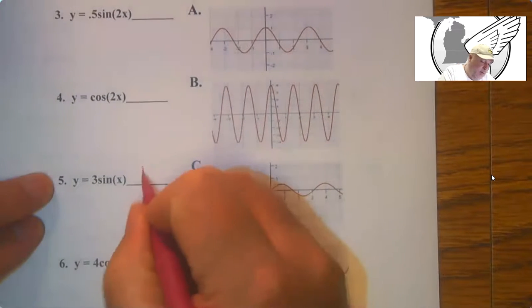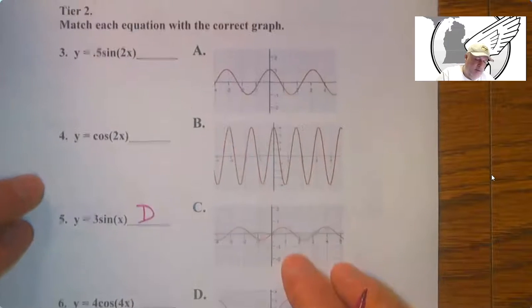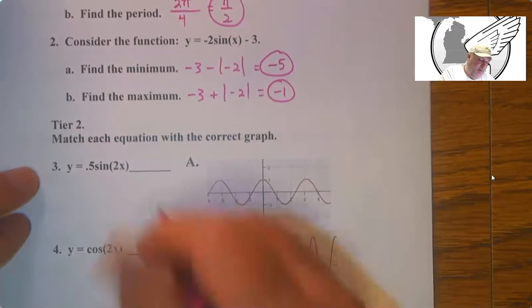So that's going to be here. And then this is a sine function with an amplitude of 1 half. So that's going to be there.